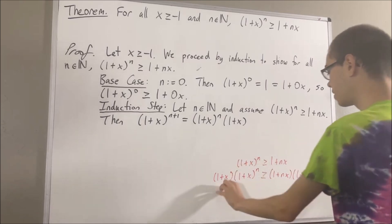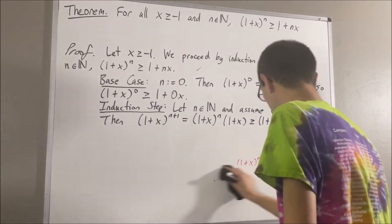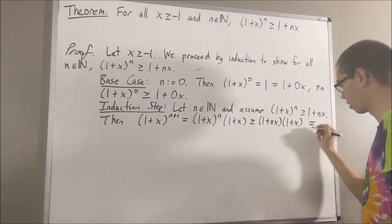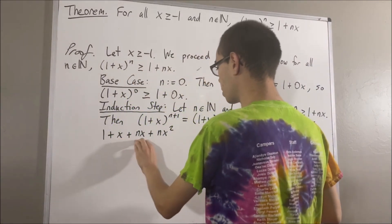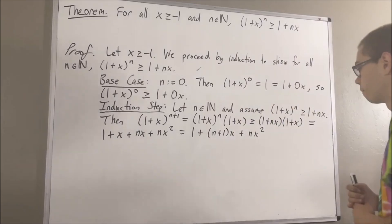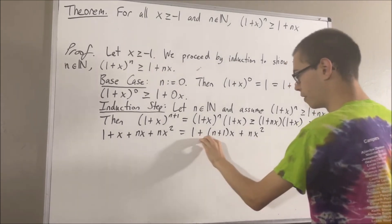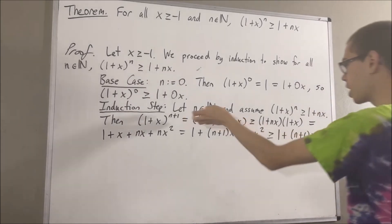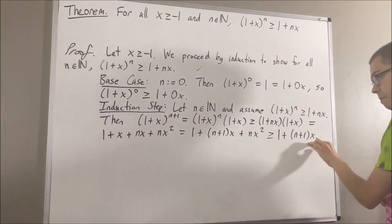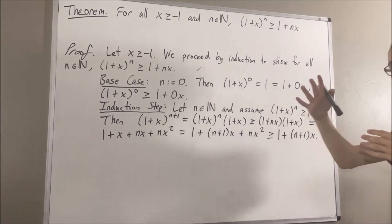So this inequality tells us that this is greater than or equal to this. If we expand this out, we get 1 plus x plus nx plus nx squared. Notice, in the two middle terms, we can factor out an x, so we get n plus 1 times x. And of course, nx squared is greater than or equal to 0, which implies that this must be greater than or equal to this. So, through this chain of equalities and inequalities, we have shown that 1 plus x to the power of n plus 1 is greater than or equal to 1 plus (n plus 1)x. That was the whole goal of the induction step, so this completes the induction step.